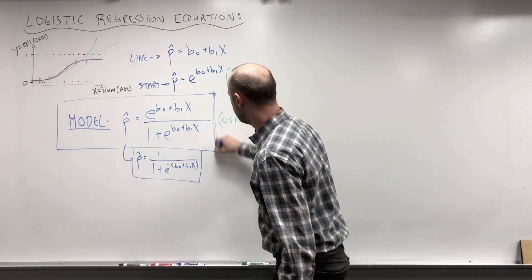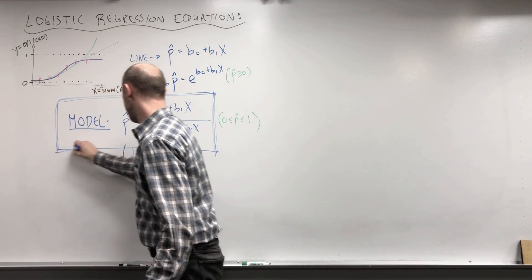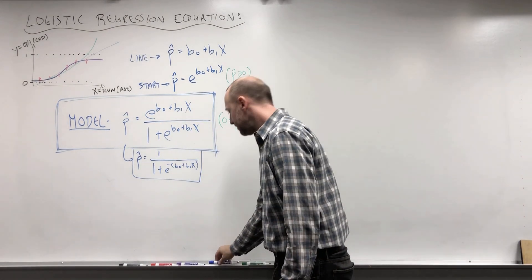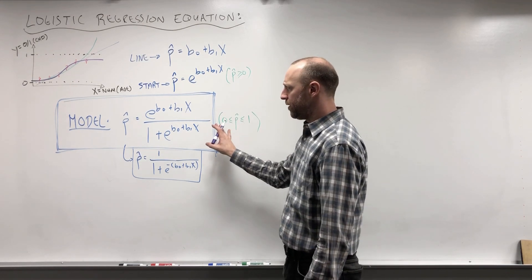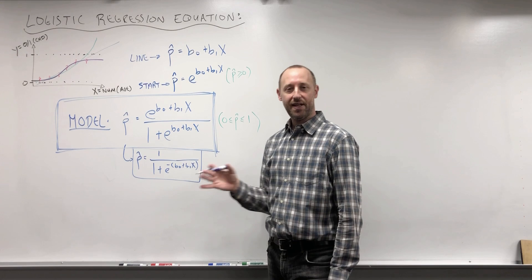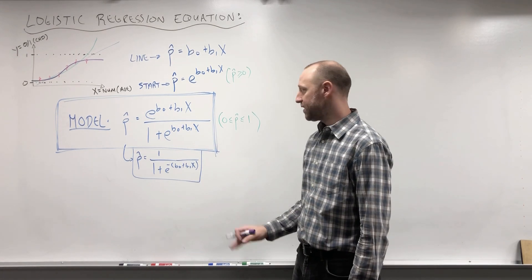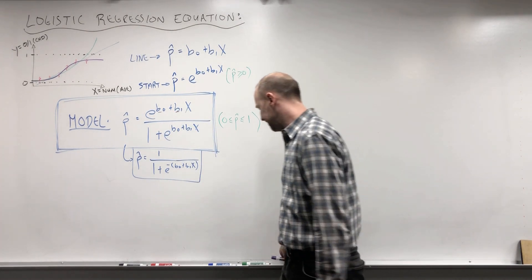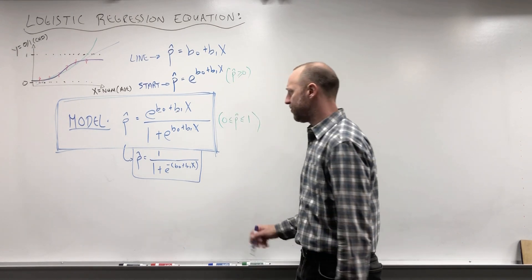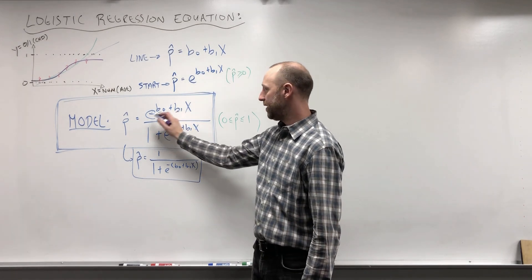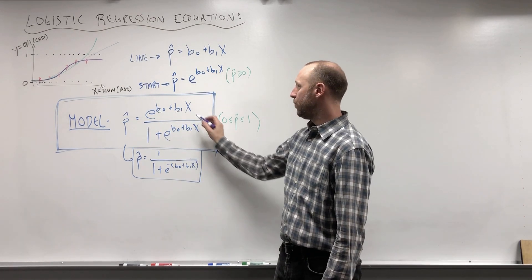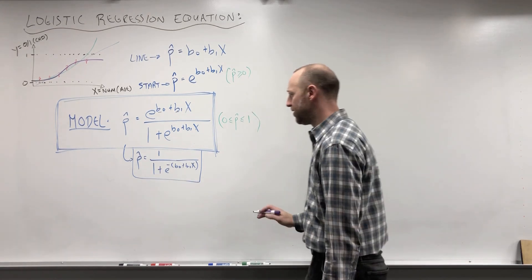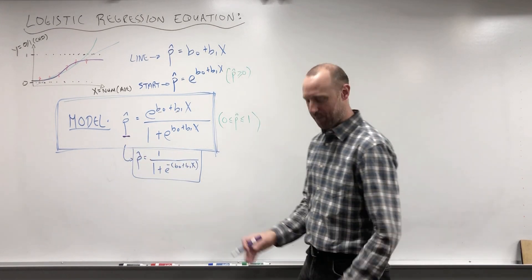So this is the model we're going to work with: modeling the probability of the outcome as a logistic function of the X variables. We're going to look at the data set in R, fit a model, get the estimated values for the intercept and the coefficient for X, and work with numeric values of the model. Right now, looking at the expression of the model, we can substitute in values of X — for example, for a given age — to get the predicted probability of coronary heart disease.